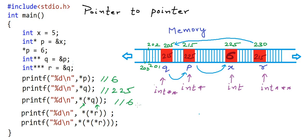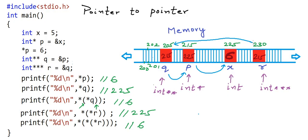What about the two print statements **r and ***r? *r means the value at the address stored in r, which takes us to q and gives 215. Then one more dereferencing, **r, takes us to the value in p which is 225. And one more dereferencing, ***r, takes us to the value in x, which is 6. From r, using one asterisk we go to q, using asterisk twice we reach p, and using asterisk thrice we reach x.